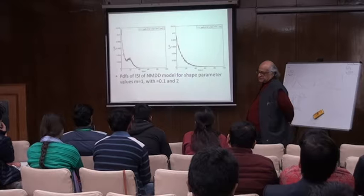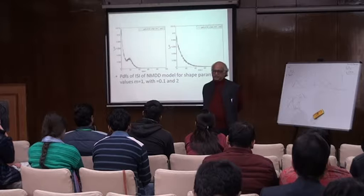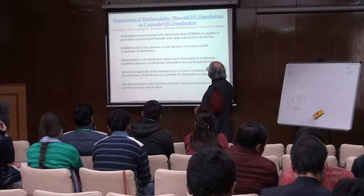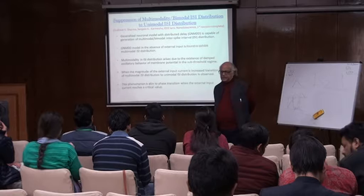So it means the neuron is not receiving the signal instantaneously — it is taking time to receive that signal. Further, you are finding the ISI distribution. So these are all different simulations where you are finding those results. Then, suppression of multimodality and bimodal distribution — this is the same thing, done with my students Sudhir and Sandeep.